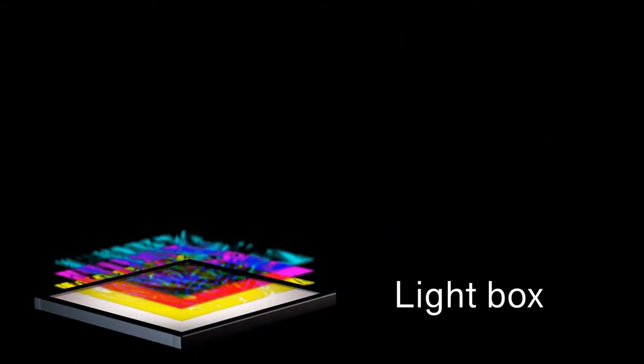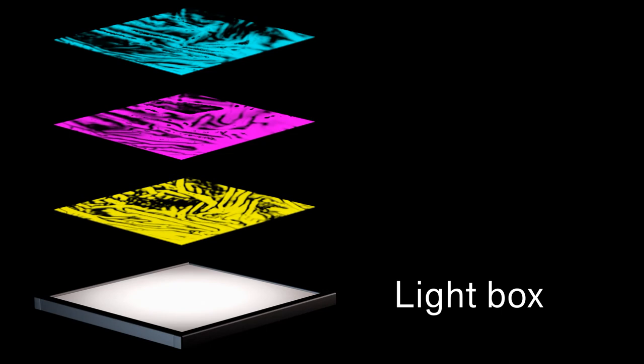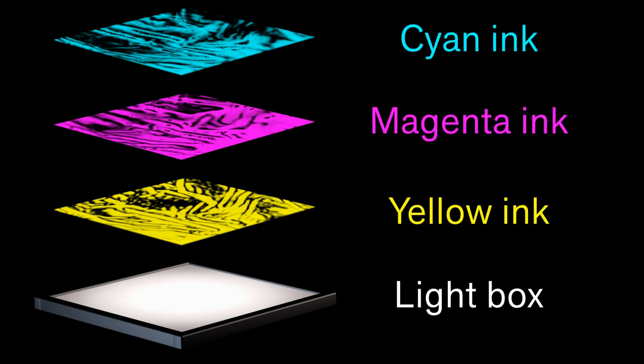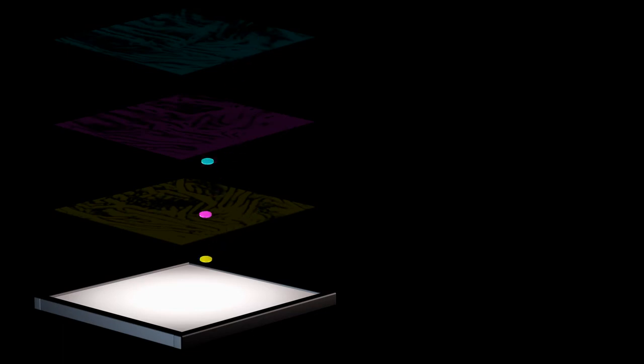On top of the light box are three separate layers of colored ink: cyan, magenta, and yellow. Let's take a closer look at how these inks interact with light.